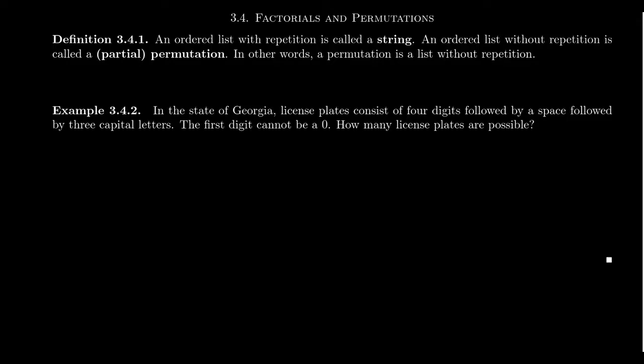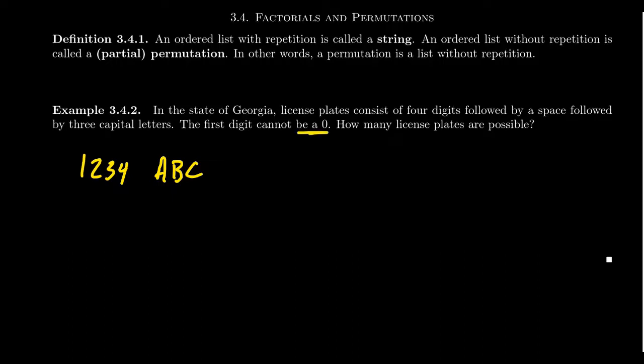Let's see some examples. In the state of Georgia, license plates consist of four digits followed by a space, and then by three capital letters. So you might get something like 1234, then a break, ABC. This would be a typical Georgian license plate. If the first digit cannot be zero, how many different license plates could you possibly have here? We have four buckets that have to be filled with digits, and then three buckets that have to be filled with a Roman character.